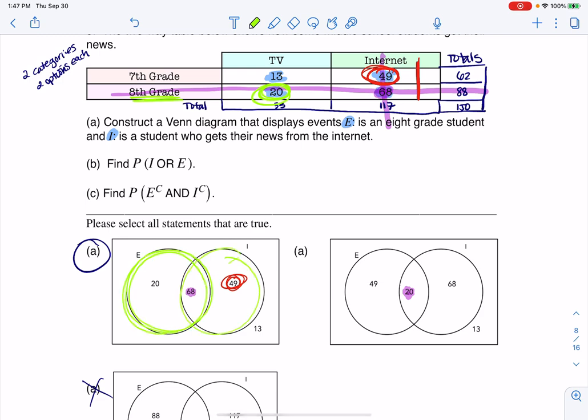And that's why you see them over here, over in the 8th grade circle. So those are our 8th graders that don't get their information or their news from the internet, or really they get it from TV. And then let me change colors once again.